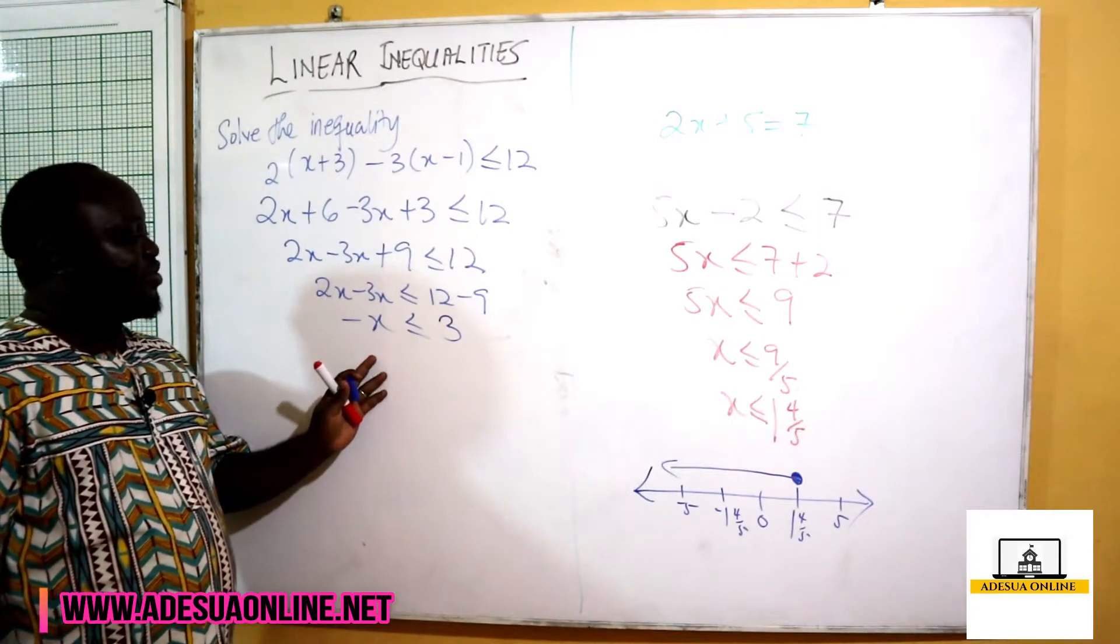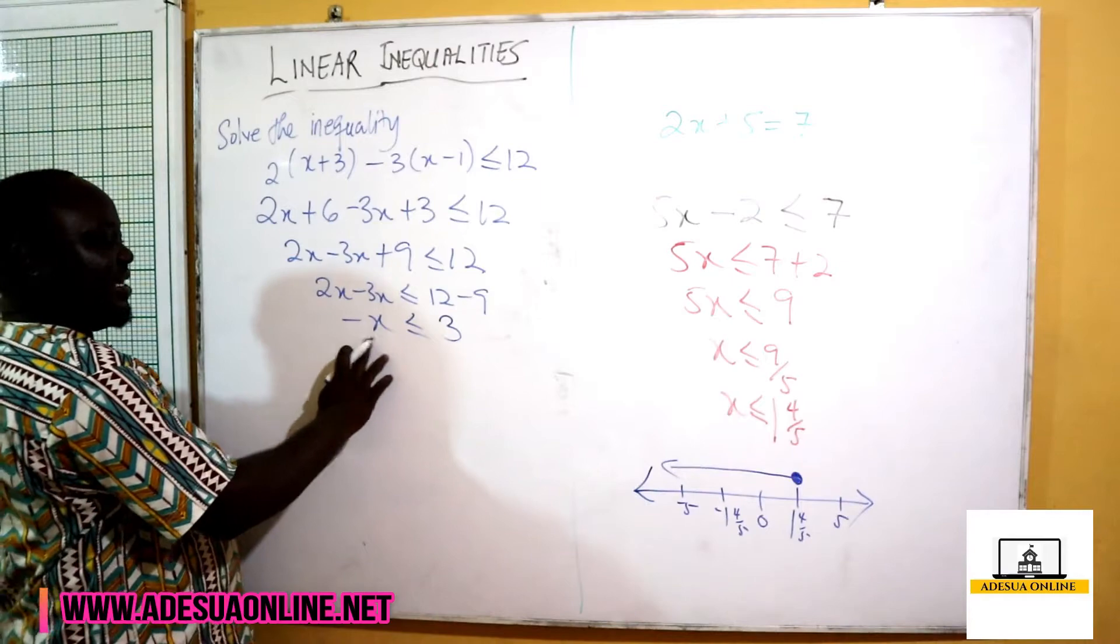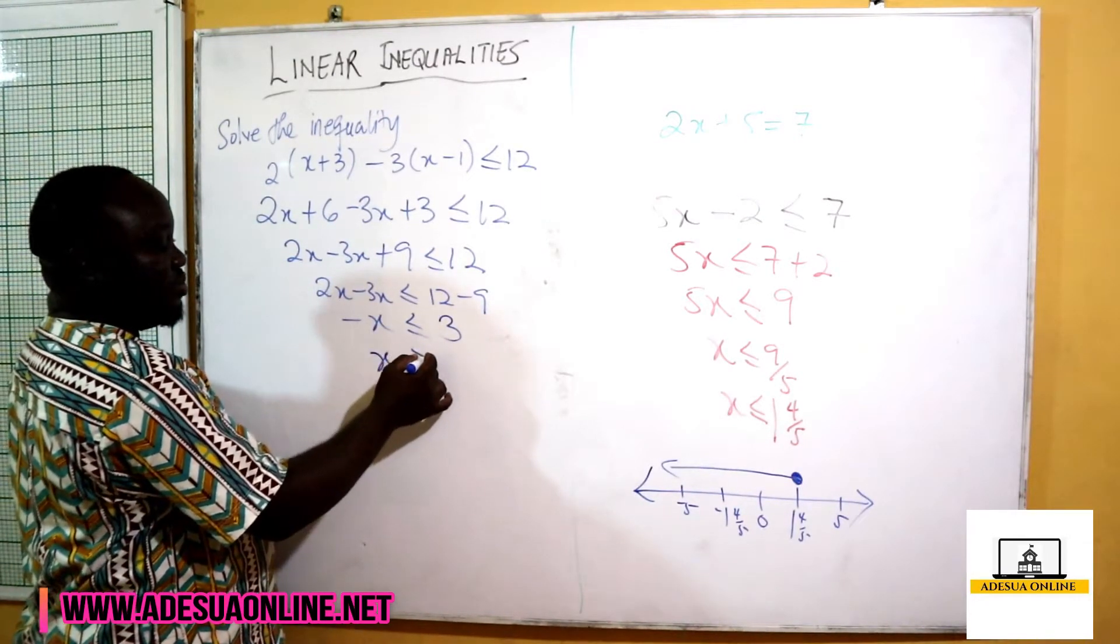So we are going to multiply by negative 1 and then change the symbol. When I multiply this by negative 1, you shall have positive x, and I change the symbol to be greater or equal to. This becomes negative 3.